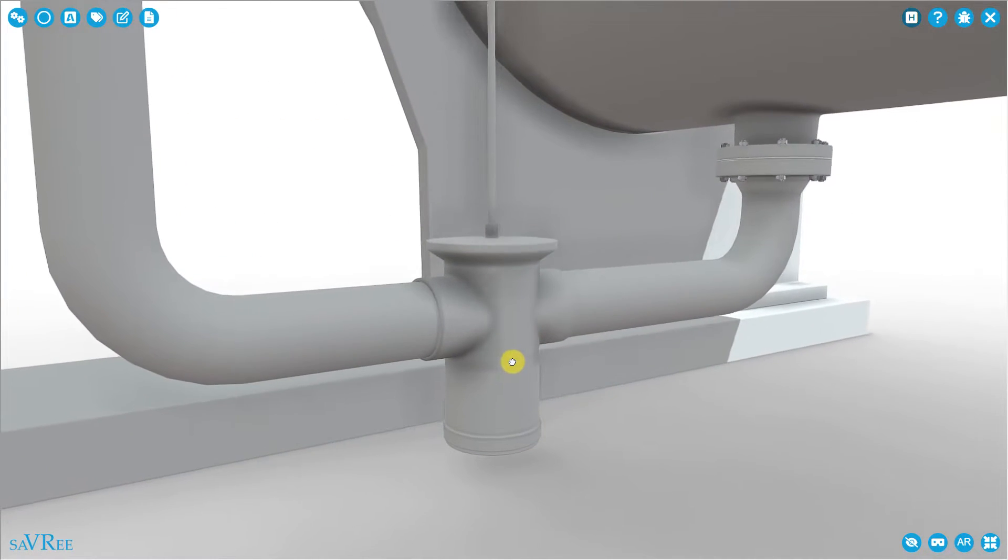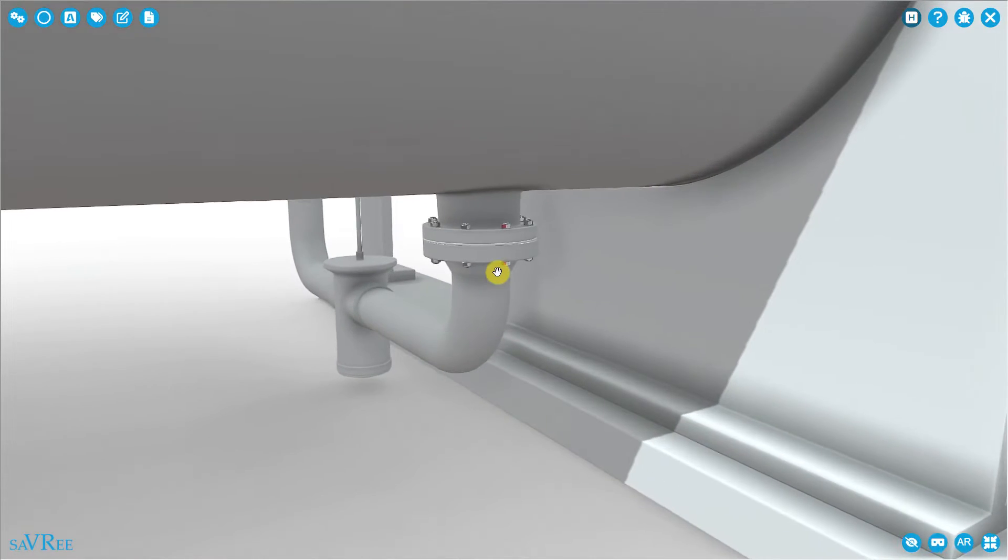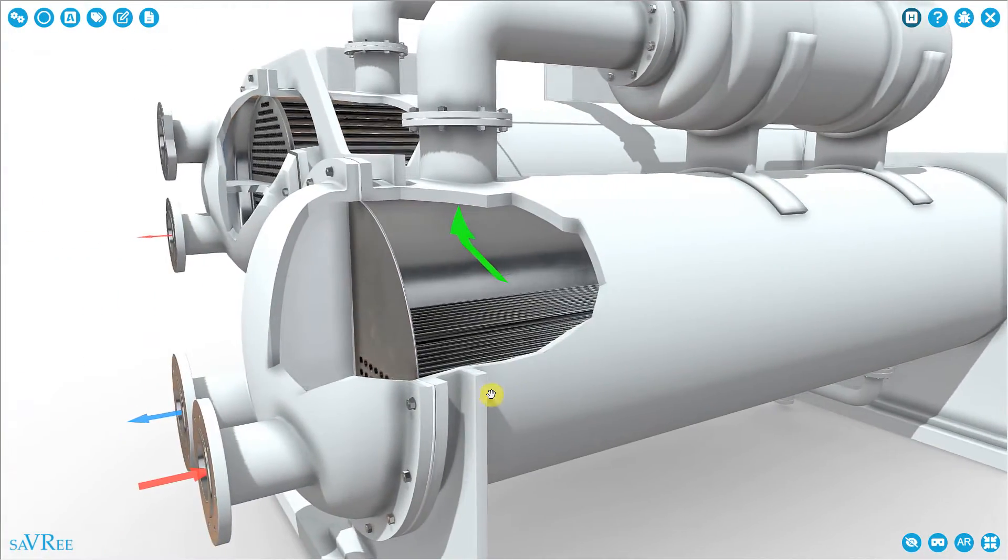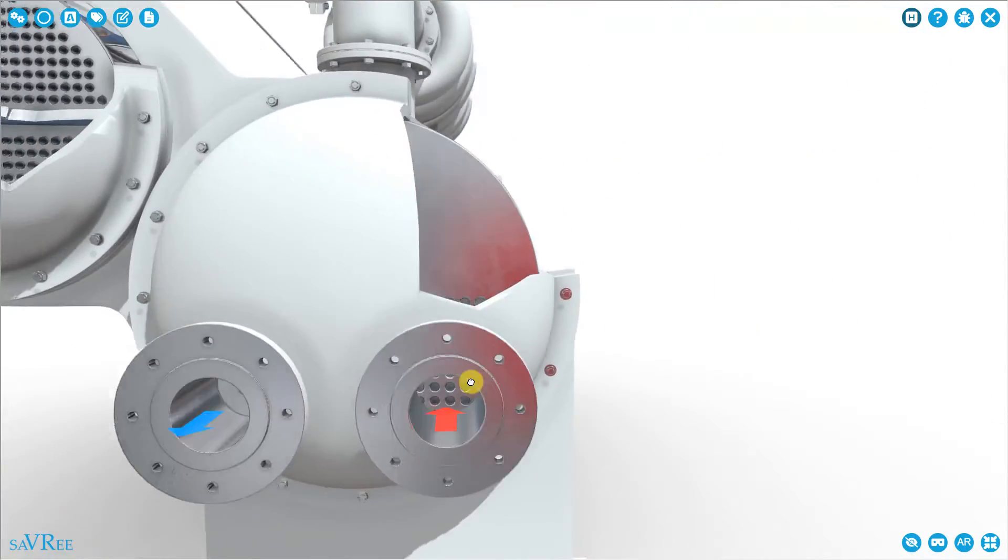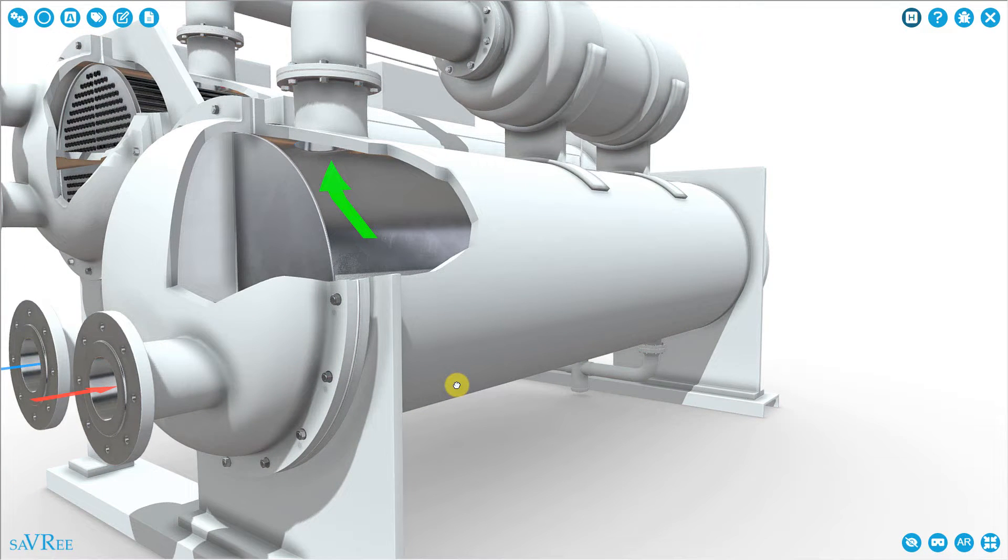It flows through our expansion valve. It's the side to where my mouse is. And then it will flow into another shell and tube heat exchanger, the lower one. And this one forms our evaporator. Now we're going to boil the refrigerant, changing it from a liquid to a vapor.